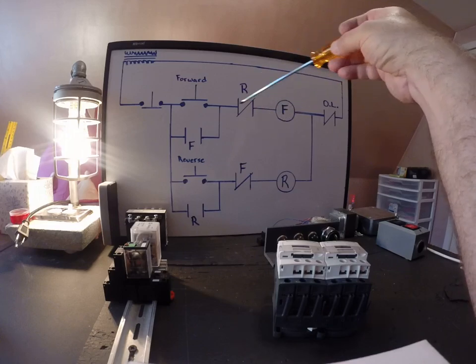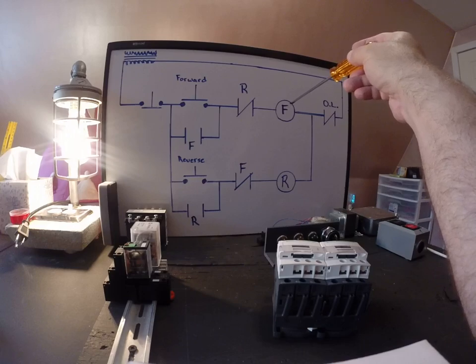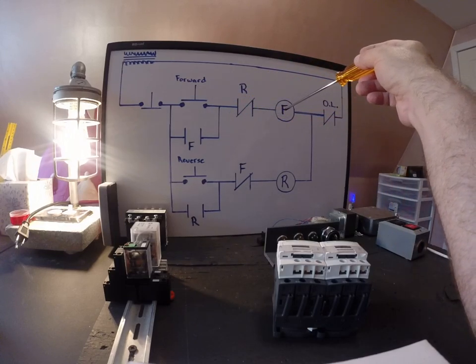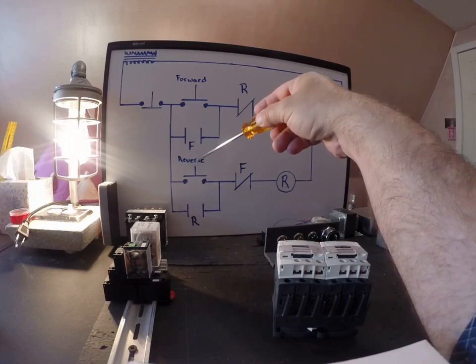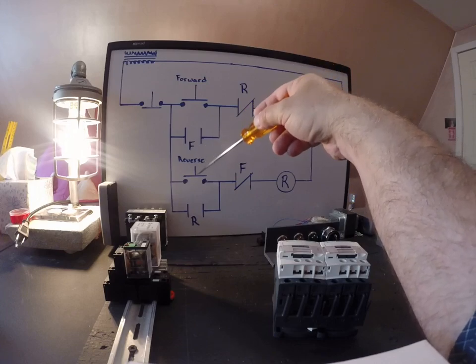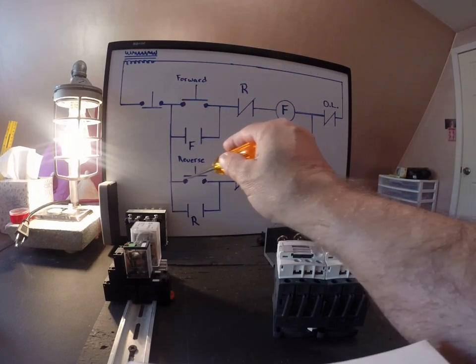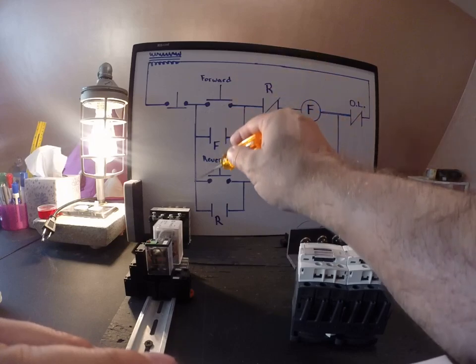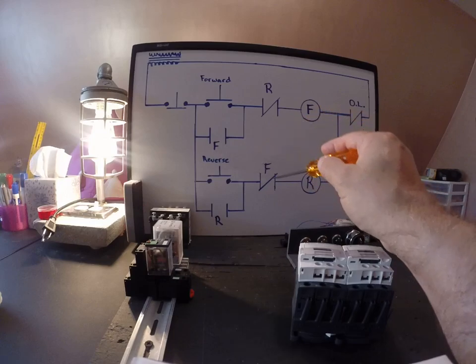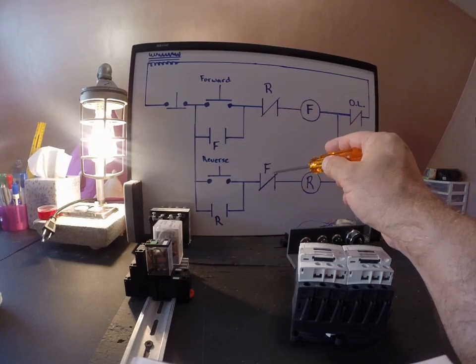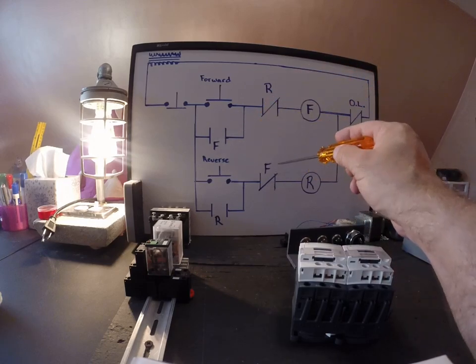So, how does that work? This normally closed contact is normally closed in the forward instance because when I energize the F-coil, this closes and my forward is simply in forward. Now, if I was to hit this reverse button, if I was to try to hit the reverse button, think about what would happen. I know I have electrons on this side of the circuit already. I know I do because they're already on that line. If I hit the reverse, remember that this contact closed. Well, when we're in forward, that closed, that means this one had to have opened because here's another F-contact.